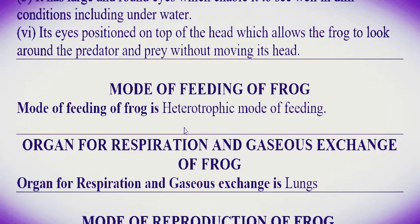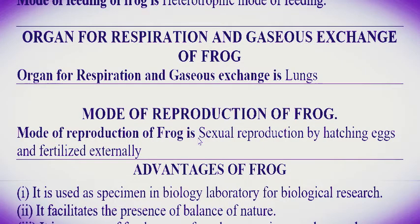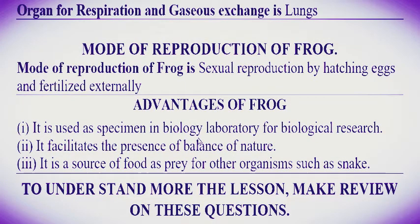Mode of feeding: the frog is heterotrophic in its mode of feeding. Gaseous exchange is performed through the gills. Mode of reproduction: sexual reproduction by hatching eggs and performing external fertilization. Advantages of the frog: number one, it is a common specimen used in biology laboratories for study. Number two, it helps maintain the balance of nature. Number three, it is a source of food as prey for other organisms such as snakes.